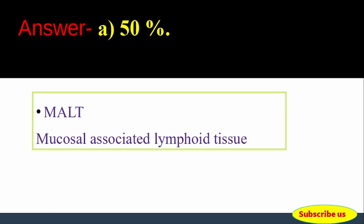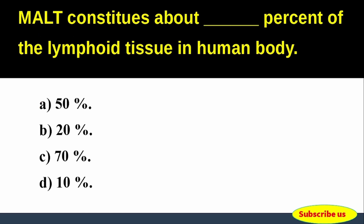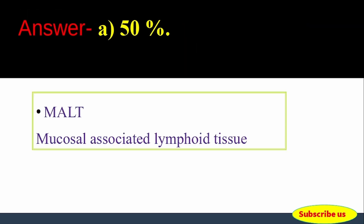Answer: Option A, 50%. MALT constitutes about 50% of the lymphoid tissue in the human body. MALT stands for Mucosal-Associated Lymphoid Tissue.